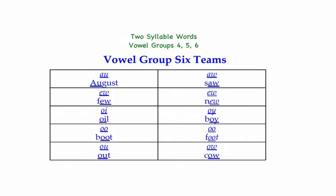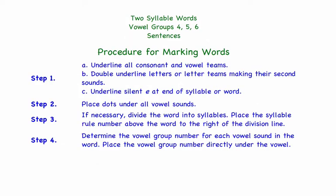These are the vowel teams we have learned thus far in the program. We also have developed a marking system to use when spelling words to analyze the phonetic elements within the words. The procedure is: first, look for vowel teams or consonant teams. If a letter represents its second sound, double underline that letter or letter team. If a silent E occurs in the word, underline the silent E. Then place dots under all vowel sounds — however many vowel sounds you have is the number of syllables. Once we have two or more vowel sounds, we divide the word into syllables, apply the syllable rule above the word, and associate a vowel group number with each vowel sound. I will now begin dictating the ten rows of words.